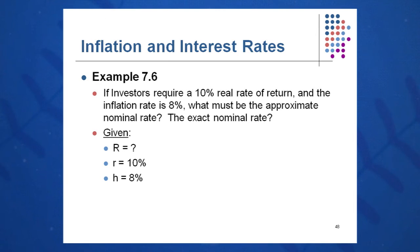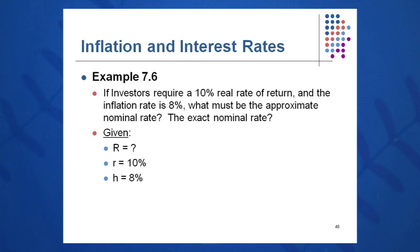Let's look at an example of the Fisher Effect and how it could impact you. One way you will be impacted very early in your life will be your first raise. If the boss gives you a 3% raise for outstanding performance and you read in the Wall Street Journal that inflation has been averaging 3% over the last several years — that's really about its average rate for the last 75 to 80 years — you've gotten a big R of 3% and an h of 3%, so you've just gotten a real raise of approximately 0%. Be very, very sensitive to this Fisher Effect — it's very important in your life.